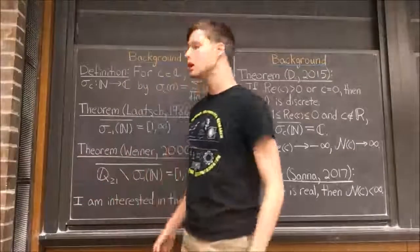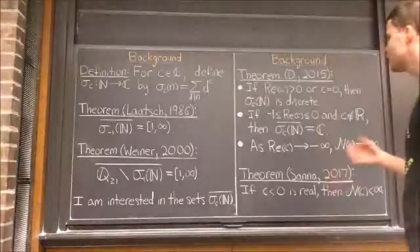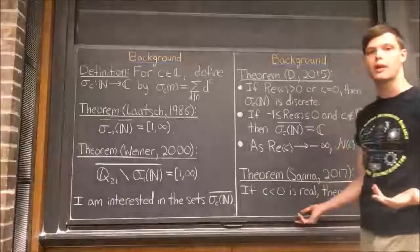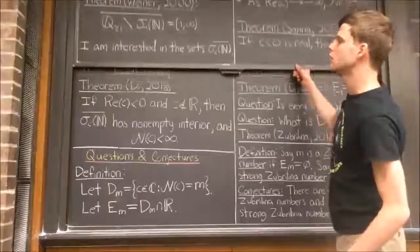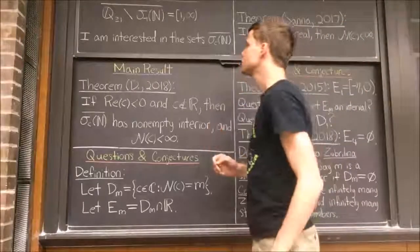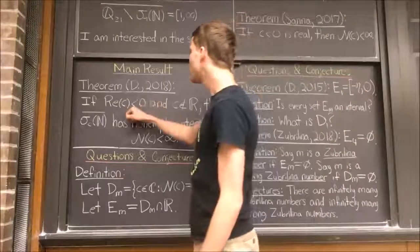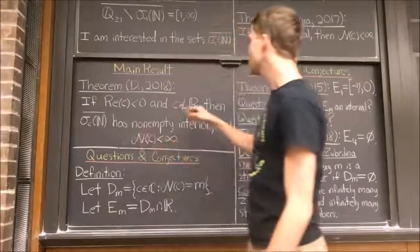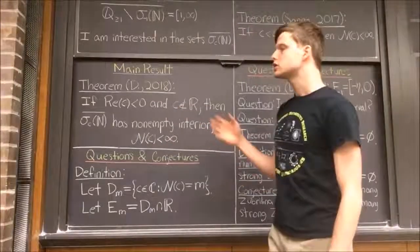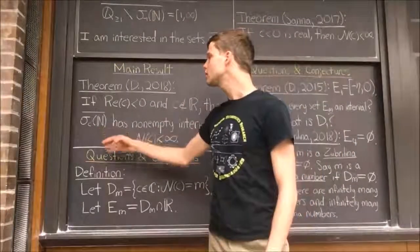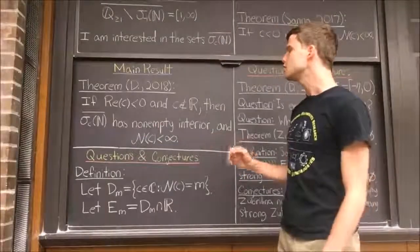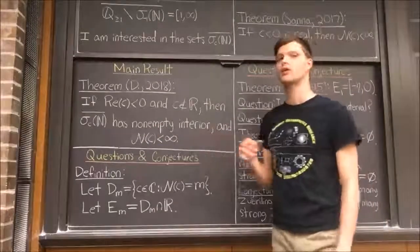The purpose of the current article is to extend Sanna's result to the case in which c is a complex parameter. The main result here states that if the real part of c is negative and c is not a real number, then the closure of the range of σ_c has non-empty interior and has only finitely many connected components.